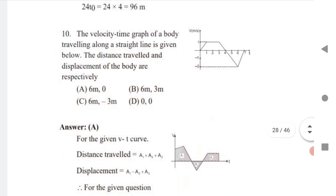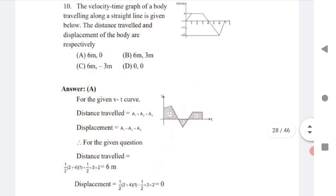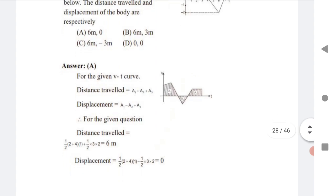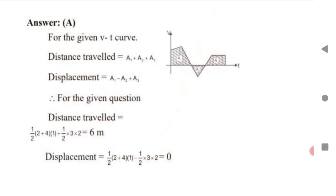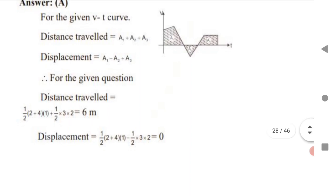Next, a very common exam question: the velocity-time graph of a body traveling along a straight line is given. Find the distance traveled and displacement of the body. Distance traveled = A1 + A2 + A3. Displacement = A1 - A2 + A3. Calculate distance using trapezium and triangle formulas. Substitute those formulas; you will get the answer. The displacement comes out to zero.